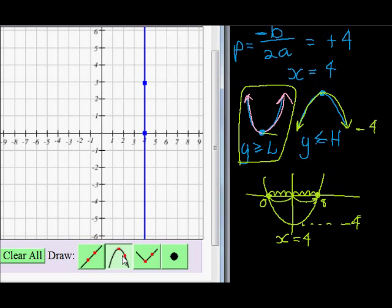And we start by drawing the vertex or the turning point. The turning point is on the symmetry axis when y is equal to -4. So on the symmetry axis, y is equal to -4.